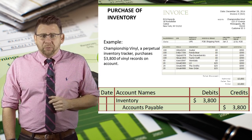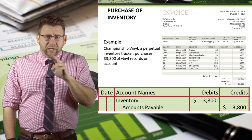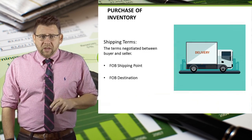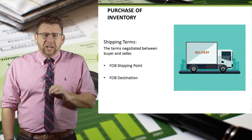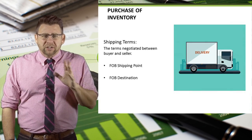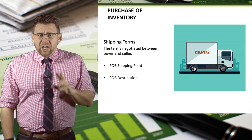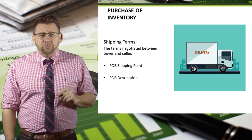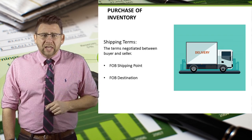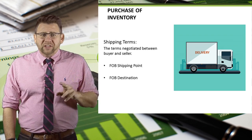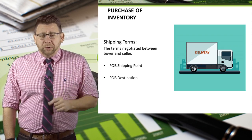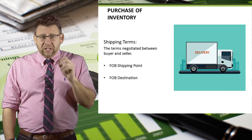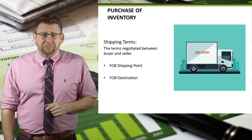That's pretty straightforward, so let's complicate it a bit by introducing the shipping terms. The shipping terms are negotiated between buyers and sellers. The two most common terms are FOB shipping point and FOB destination. In addition to these terms being important for accounting purposes, they are also legal terms involved in contracts that require delivery.